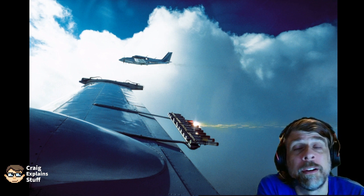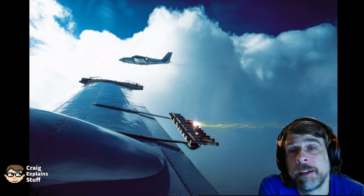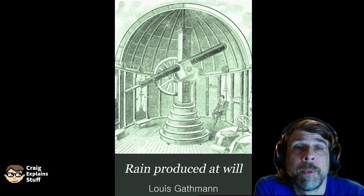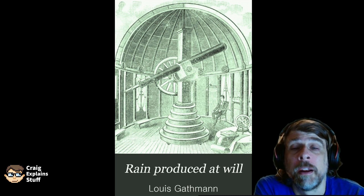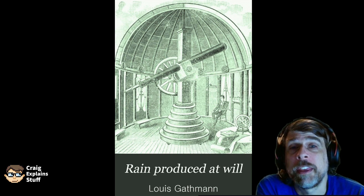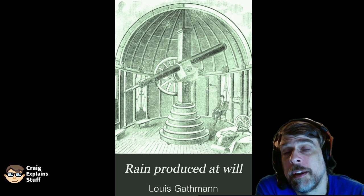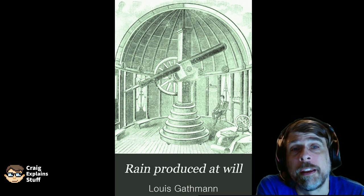Now, a little bit about the history and development of cloud seeding. Cloud seeding was first thought of by this man, Louis Gathman. Louis Gathman was an inventor who mostly made mill equipment and farm equipment, but in 1891 he wrote a book called Rain Produced at Will. In this book he talked about seeding clouds with chemicals, and modern-day cloud seeding is actually based on the principles that he wrote about in this book.